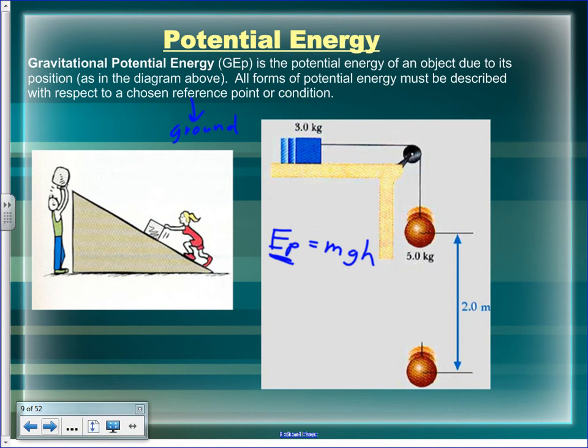Three things affect how much potential energy you have: mass, acceleration due to gravity, and height. A larger mass has more energy — you'd rather get hit by the sponge than the piano. On the moon, g is lower, so jumping from a second-story window would be like stepping off a desk here. And the higher something is dropped from, the more energy it has. For us, g is always 9.81 m/s² since we're always on Earth.